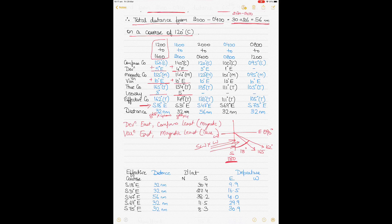From 2000 to 0400, as calculated earlier, total distance is 56 nautical miles. Course was 120° compass, deviation 3° East — add to get magnetic; variation 10° East — add to get true course. There was no leeway in this leg, so the effective course equals the true course: 133°, which equals S47°E.